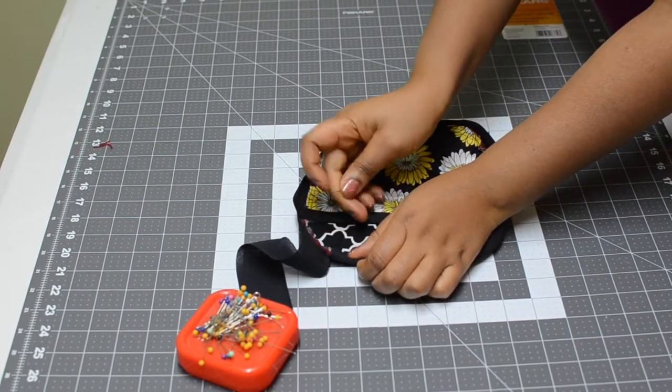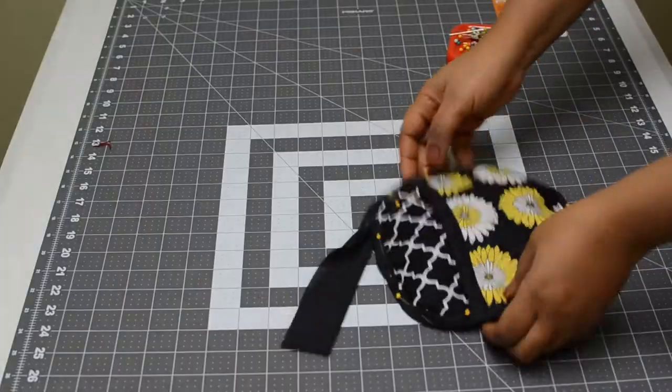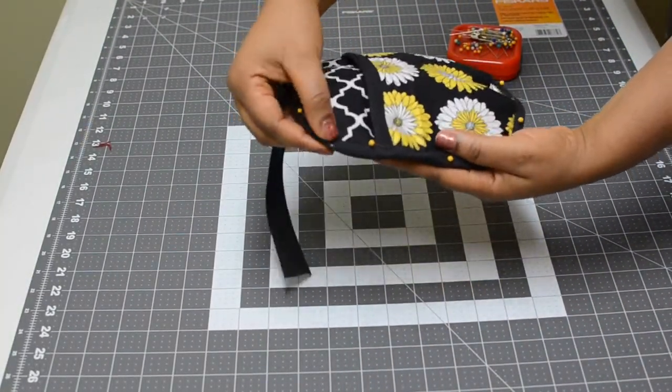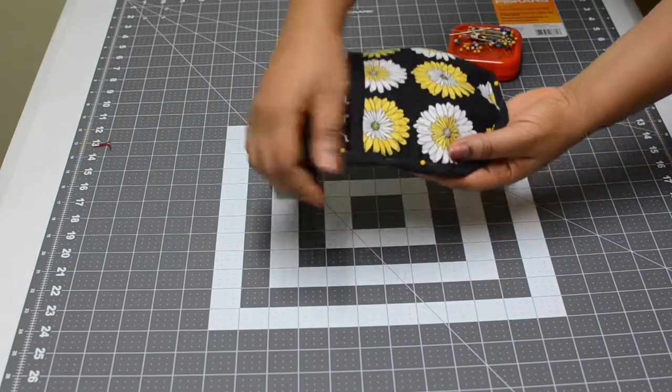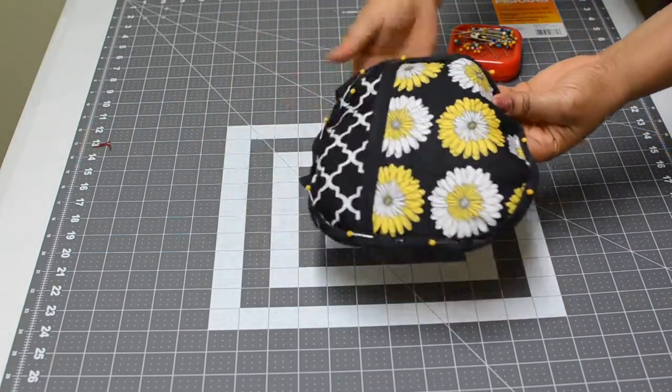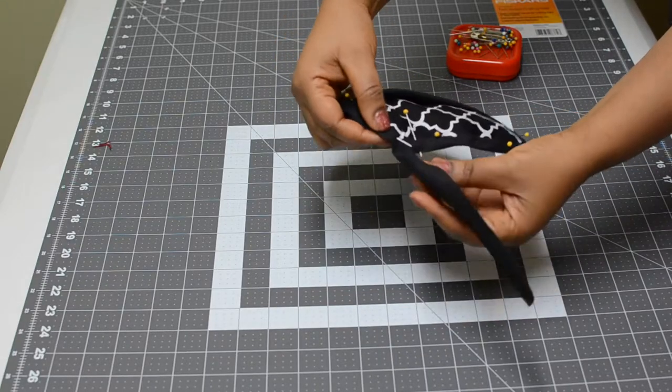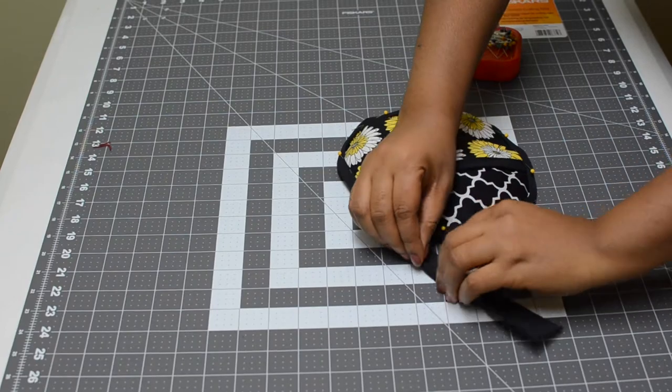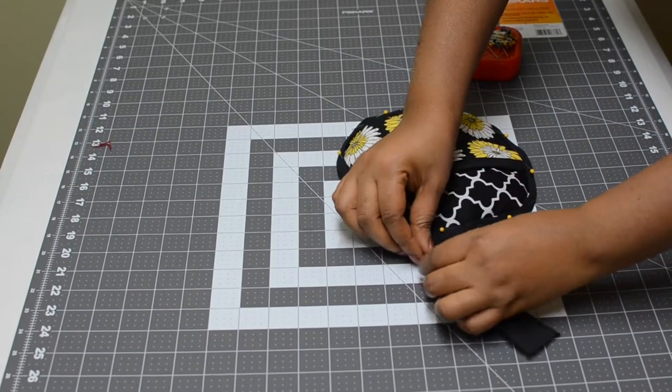I'm going to turn a quarter of an inch first, then flip it over half an inch again and pin it around while you're doing this. It will help to put things in shape and not shift while you're sewing. Take it to the machine and sew.